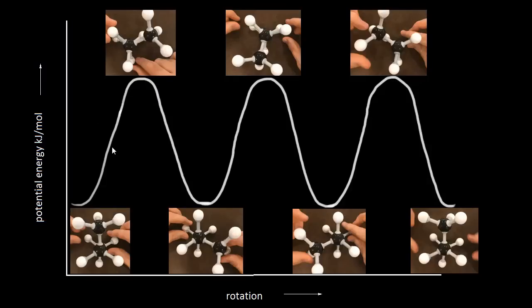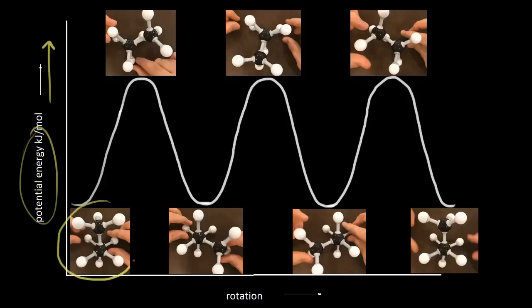Here we have the energy diagram for the conformations we saw in the video. Make sure you've seen the conformational analysis of ethane video before you watch this one. On the y-axis we have potential energy — as you increase on the y-axis, you're increasing in potential energy.